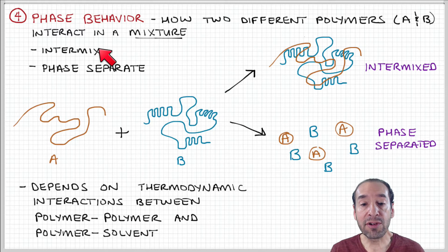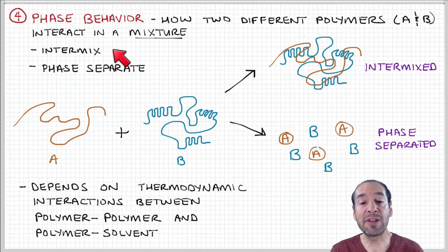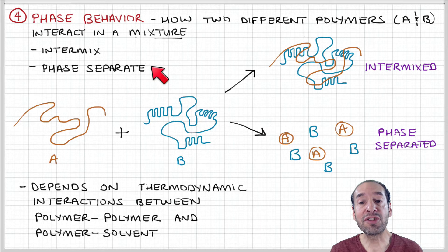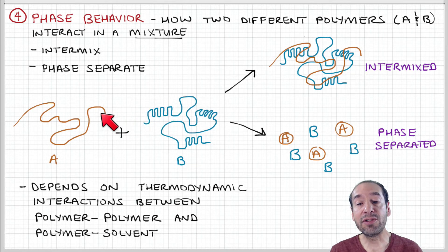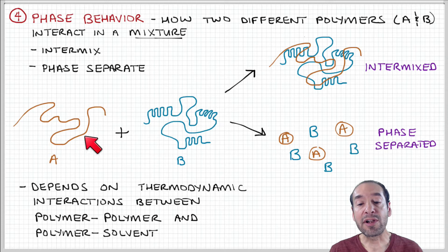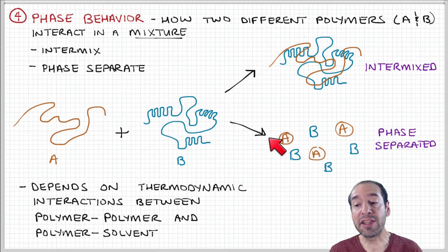There are two possibilities: either the polymer and the solvent — or in this case, two polymers A and B — can either mix together uniformly, or they can phase separate. This depends on the nature of the thermodynamic interactions between these components. If these polymers are similar in the sense that their atomic-level structure is similar — in other words, there are no repulsive interactions between them — then they can intermix. But if they're different, say they have different charges or other attributes that make them thermodynamically unlikely to form a mixture, then they'll phase separate, giving you domains rich in A and domains rich in B.